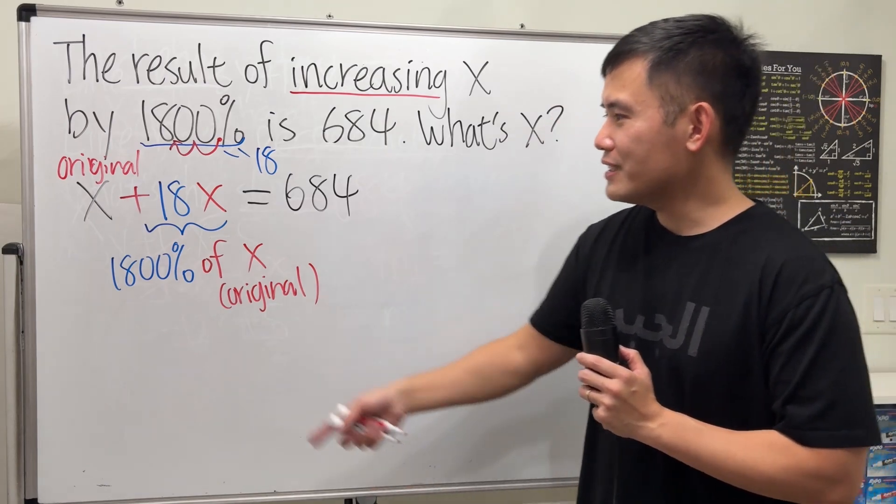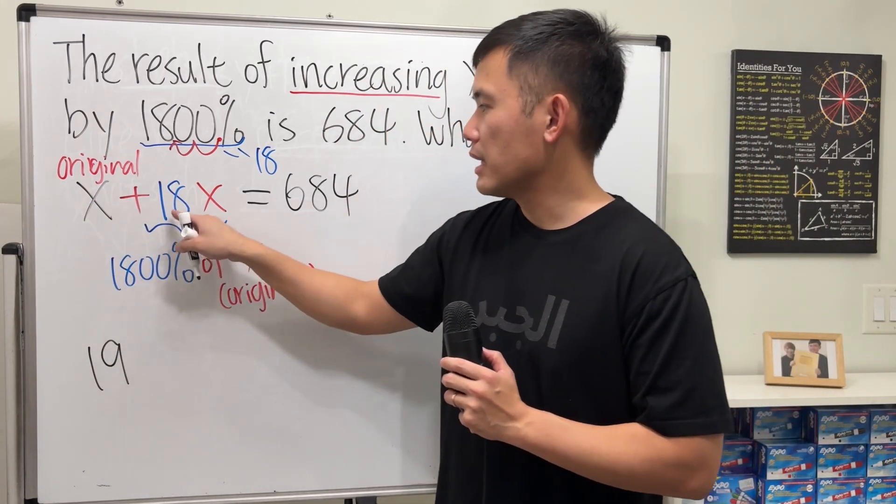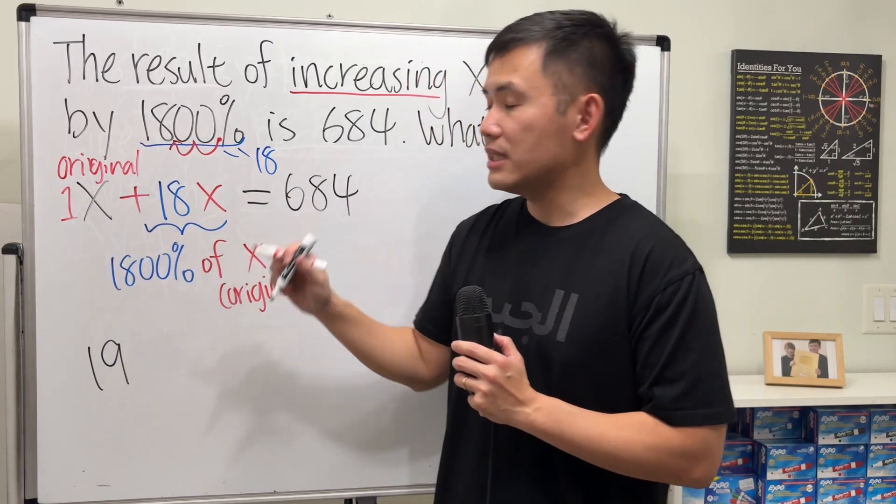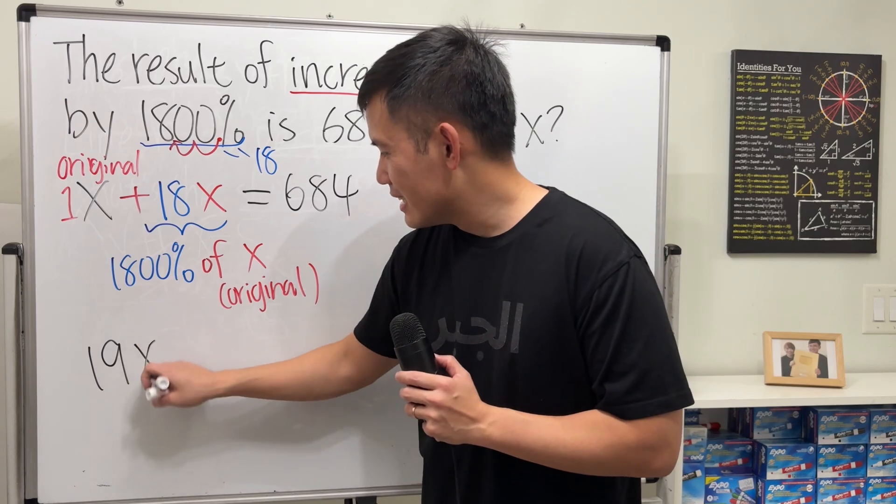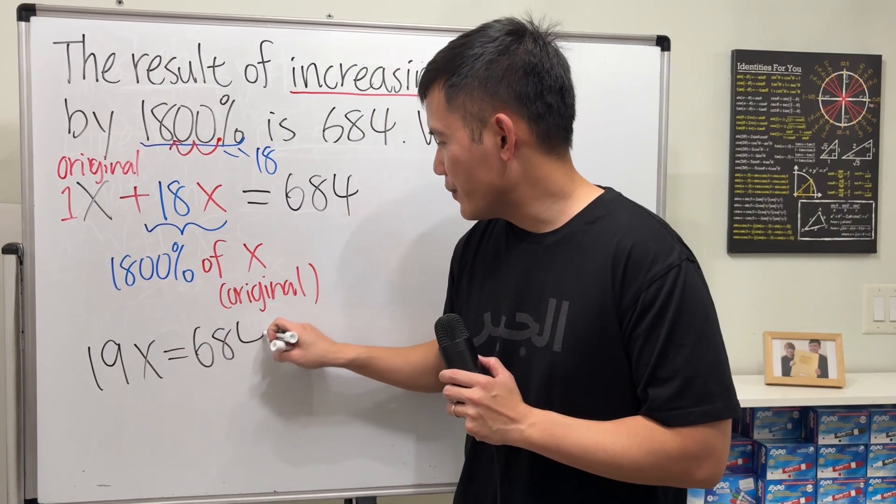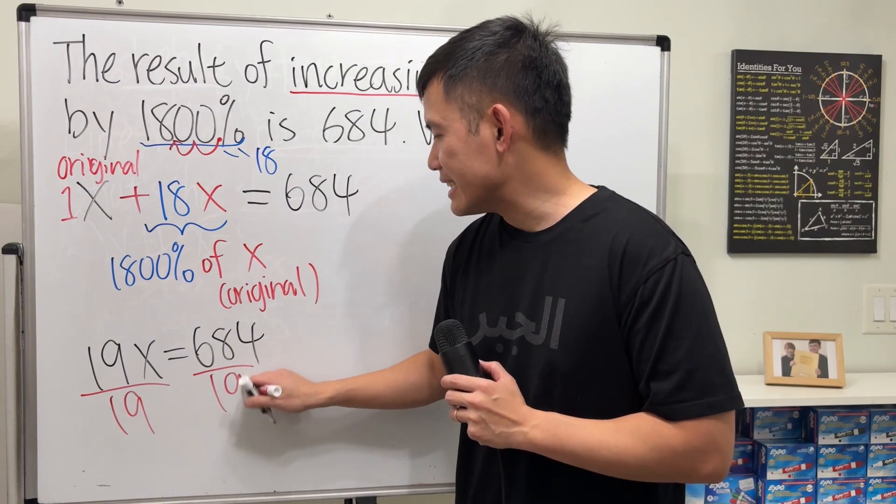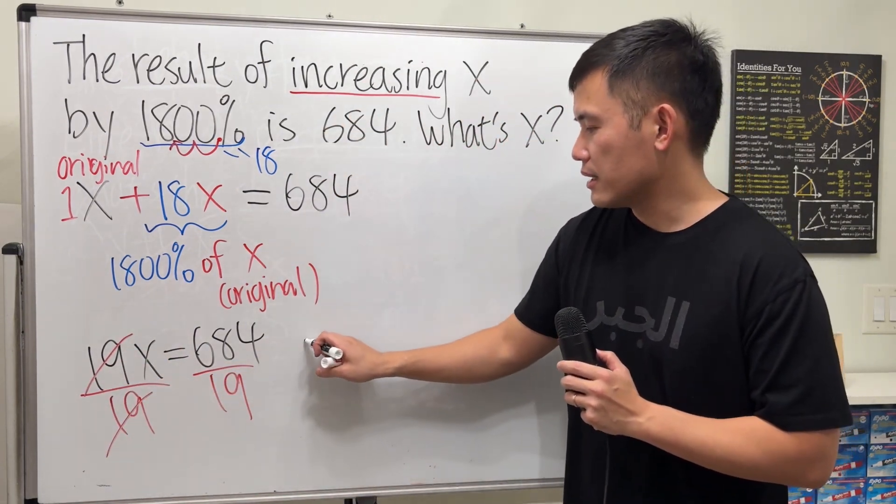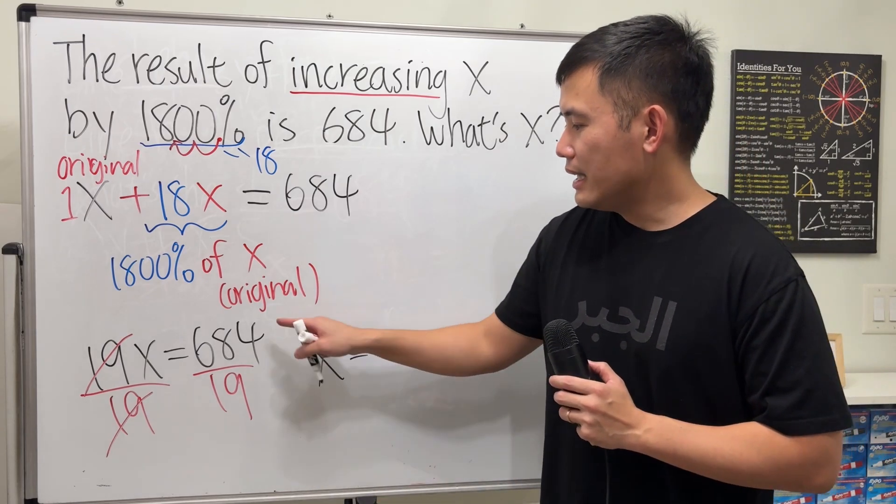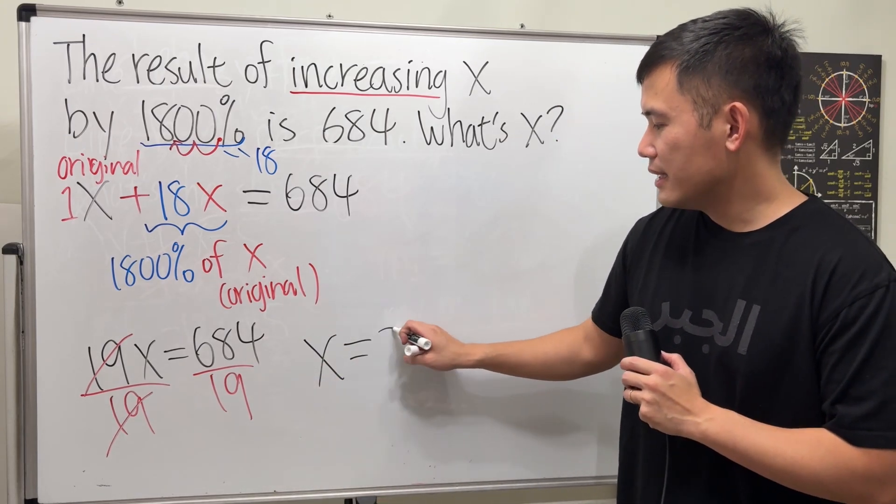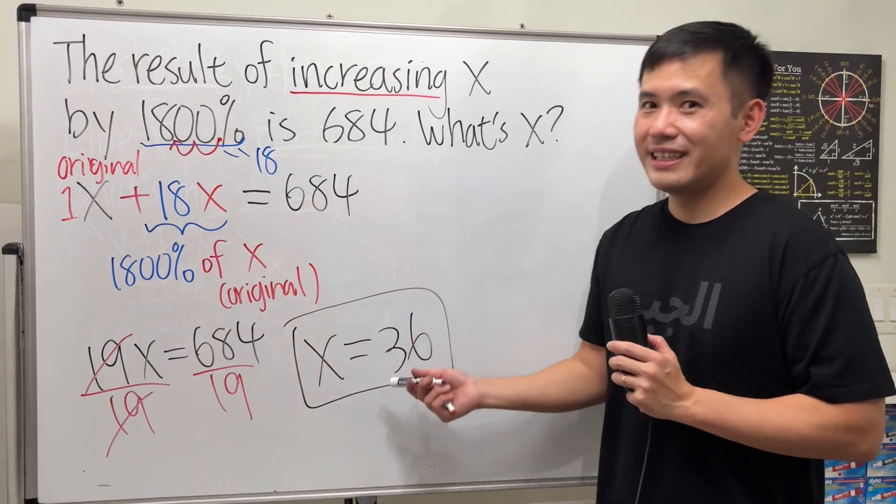Once we have the equation, we just solve it. This plus that is 19, because this is like 1 plus 18 is 19. And then, the x, it's equal to 684. And then, let's just go ahead, divide both sides by 19. Cancel. And you can use a calculator on the SAT. Or just do it in your head or so. The answer for this right here will be 36. And that's the answer.